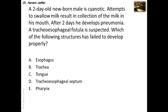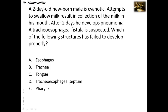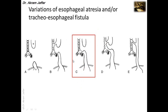The patient is cyanotic and developed pneumonia because of the tracheoesophageal fistula, and at the same time attempts to swallow milk result in collection of milk in the mouth. In many cases the infant drools, because of the atresia of the proximal part of the esophagus. Other types include atresia with tracheoesophageal fistula connected to both the proximal and distal parts of the esophagus, or simply a tracheoesophageal fistula without any atresia.